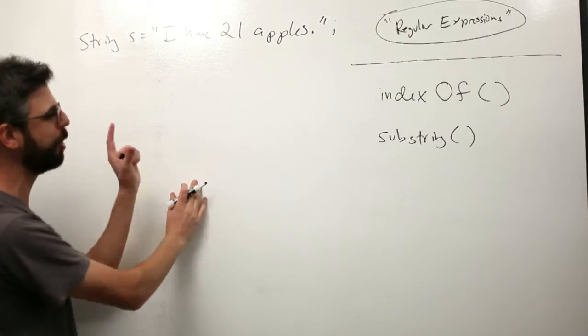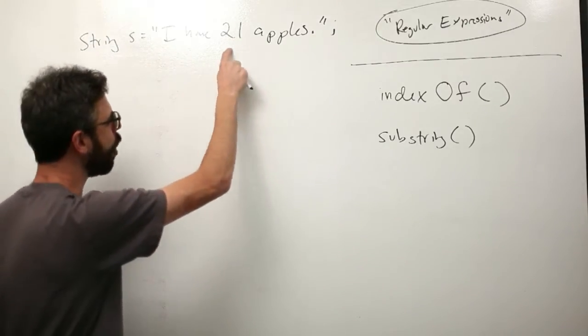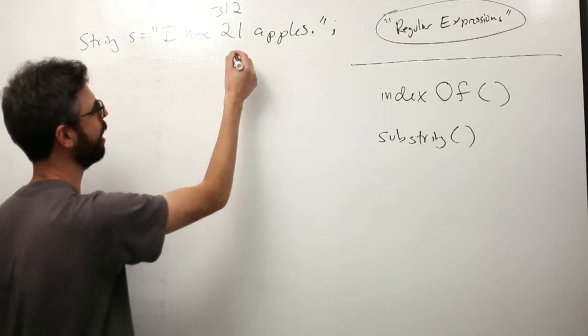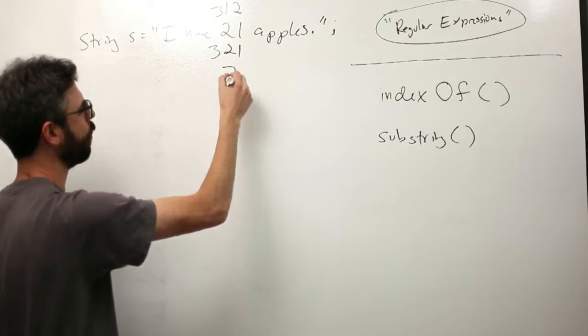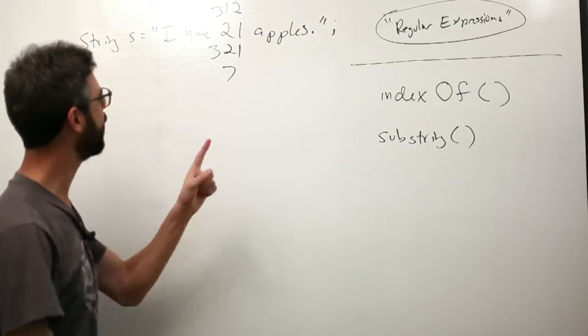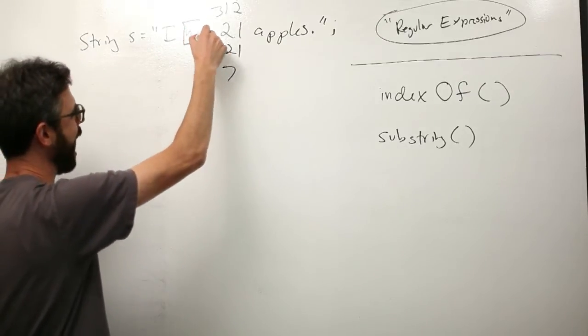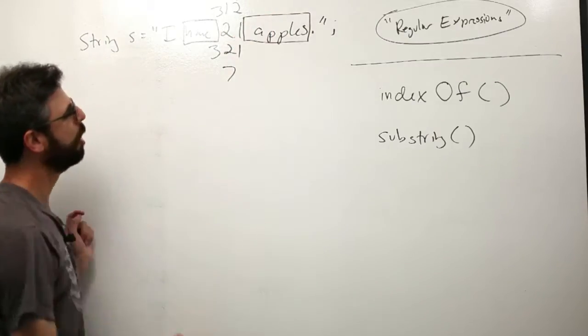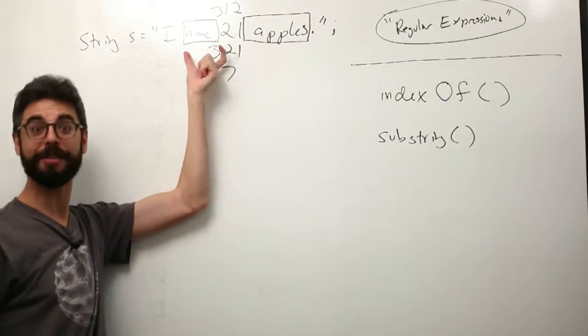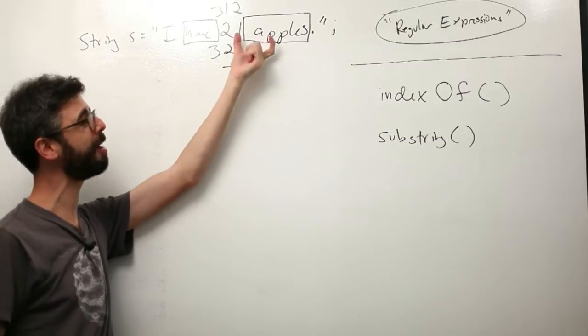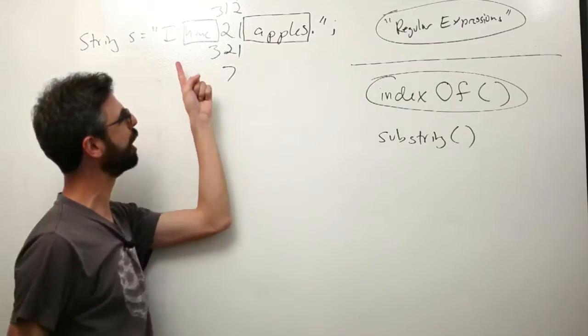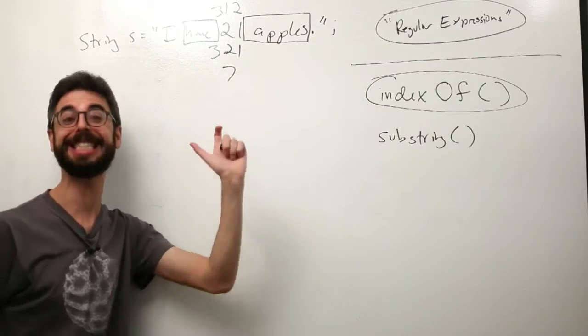Well, in processing what we could say is, okay, let's say that it was always formatted this way, just this number was sometimes different. Sometimes it's two digits, sometimes it's three digits, sometimes it's one digit, but it always comes after "have space" and it always comes before "space apples." So what if I could find wherever have is, what if I could find wherever apples is.